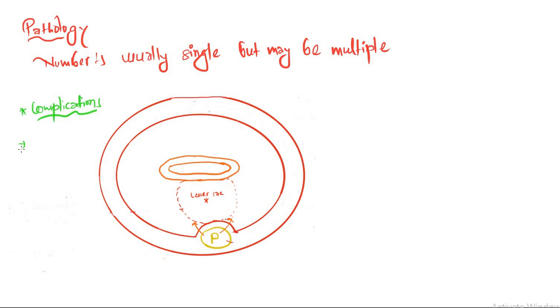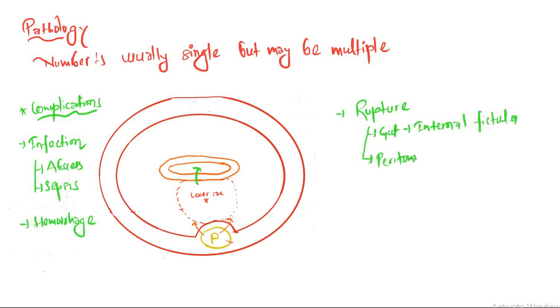Talking about the complications: infection—it may be abscess or sepsis. Hemorrhage is another complication. Rupture: if it ruptures inside the gut, it can cause internal fistula. If it ruptures into the peritoneum, it can cause peritonitis. Pressure symptoms: if it presses the bowel, it can cause bowel obstruction. It can press the common bile duct, causing obstructive jaundice.